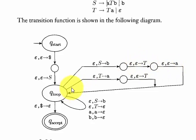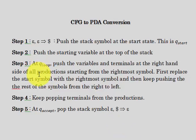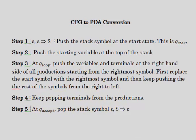The same applies for capital T. We replace T with A — the rightmost symbol — then push T on the left. This is step three, still in the q_loop state. Then the fourth rule is: we keep popping the terminals from the productions. Terminals are symbols which are never present on the left-hand side of a production — they are always only on the right-hand side.